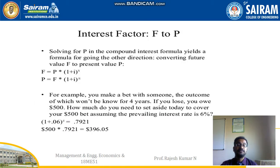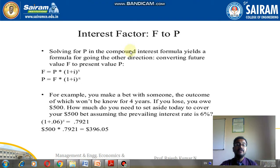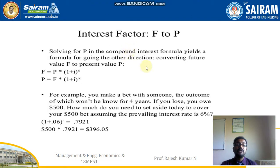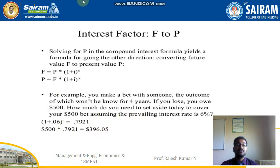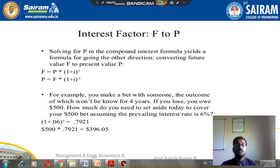The interest factor F to P: solving for P in the compound interest formula gives a formula for converting future value F to present value P. The F formula is F = P × (1 + i)^n and the P formula is P = F / (1 + i)^n, or P = F × (P/F, i, n). For example, you make a bet with someone and the outcome won't be known for four years. If you lose, you owe 500 dollars. How much do you need to set aside today to cover your 500 dollar bet, assuming the prevailing interest rate is 6%? By substituting into the formula with all the given data, we can find out the present amount needed. In the next video we will check out how to solve these problems.